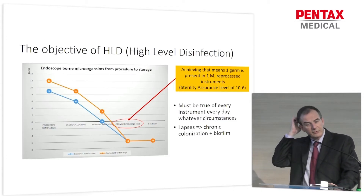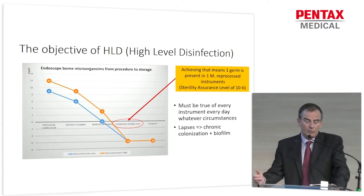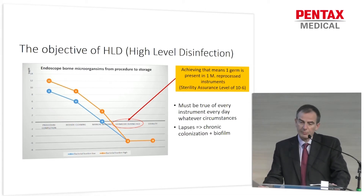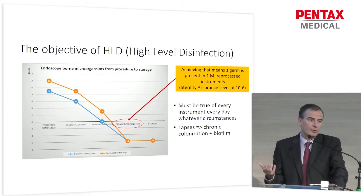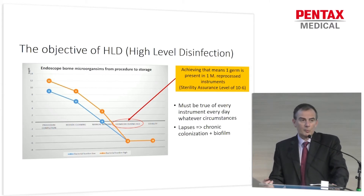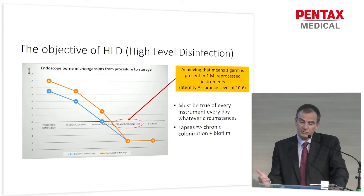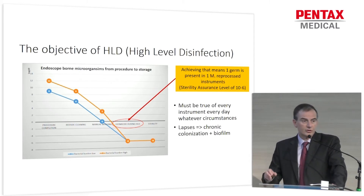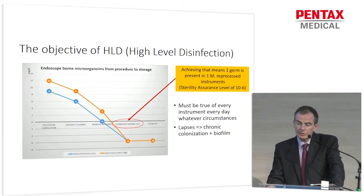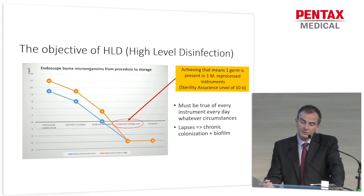To prevent these infections, we all use high-level disinfection, which is currently recommended worldwide. It has the objective of reducing the bacterial burden of the endoscope from 9 to 12 log at the end of the endoscopic procedure down to minus 6 log at the end of disinfection, which is the equivalent of a sterile instrument — meaning only one germ present for every one million reprocessed instruments, or a sterility assurance of minus 6 log.